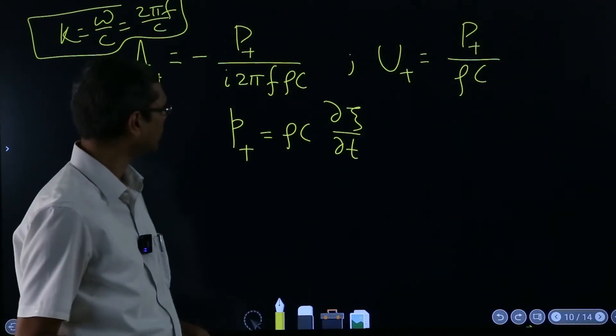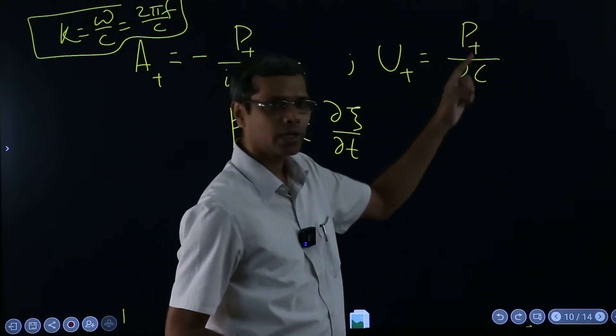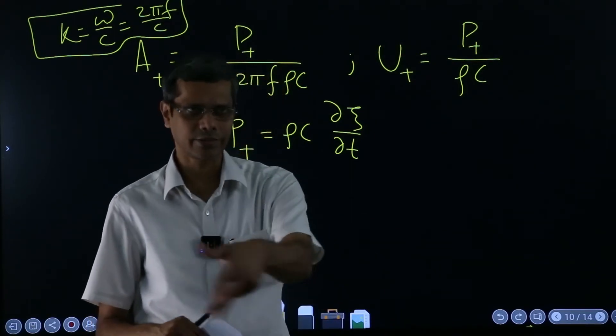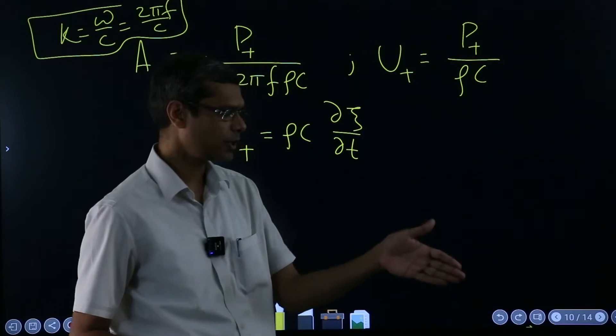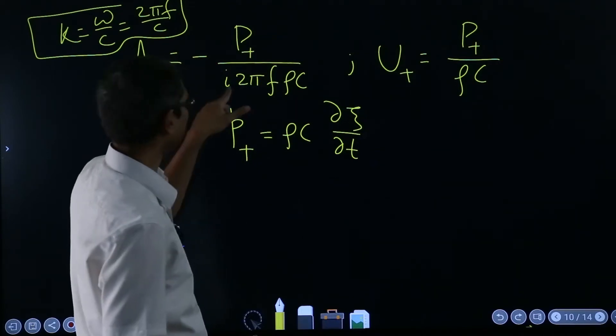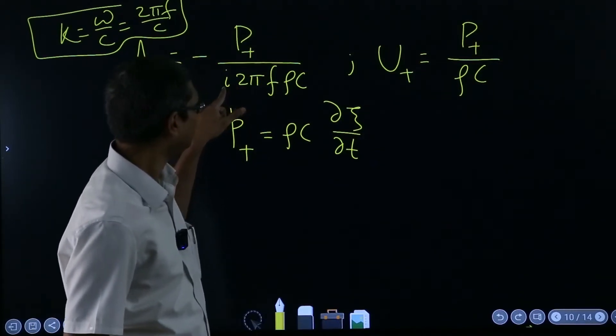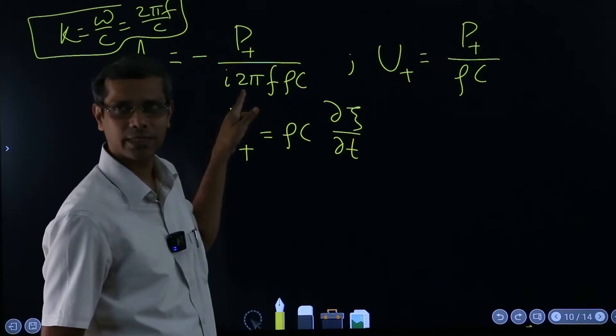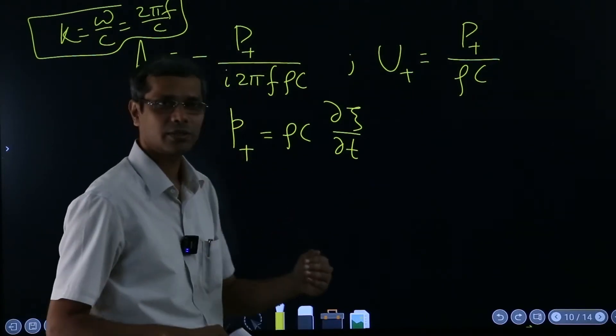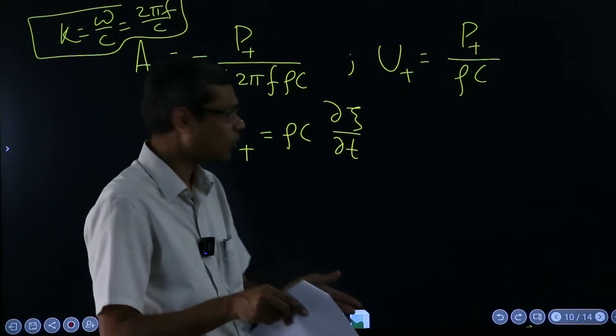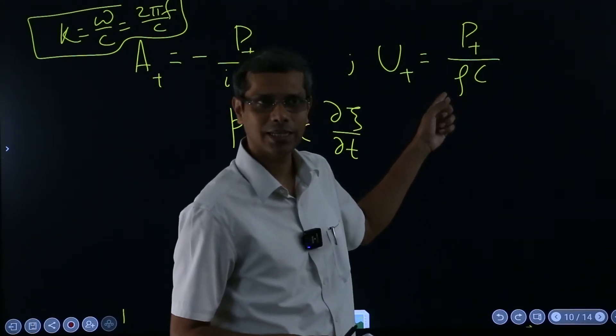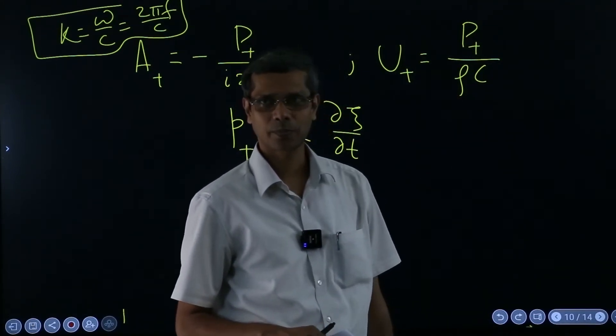Now what does it tell you? So now you see you started P plus with a real number, thinking that okay with respect to that I will discuss everything else. Pressure wave I will consider that to be at t equal to 0 it starts. Then you see this, the displacement is with a phase of 90 degrees. Right. So that means it is exactly 90 degrees apart from the pressure. And what about u, the velocity? It is exactly in phase.